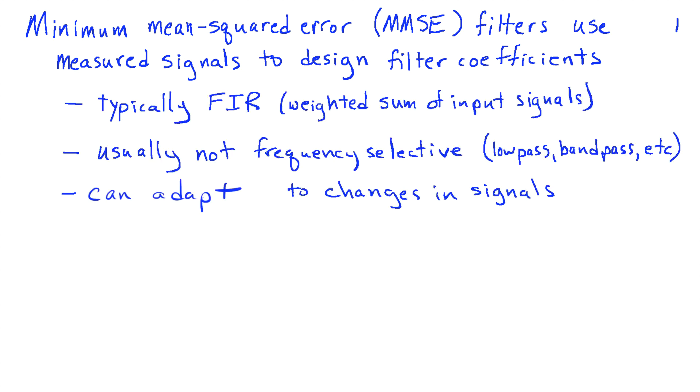We can think of this if you're used to filtering with FIR and IIR filters, that the minimum mean squared error filter is usually set up as an FIR filter, but this can easily be generalized to other cases where the filter is a weighted sum of input signals.